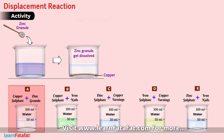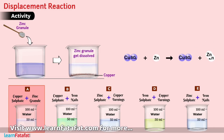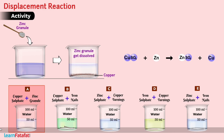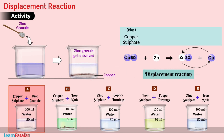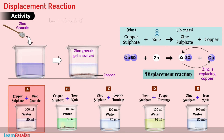What this means is that zinc must have displaced the copper atoms from copper sulphate solution. Such a reaction is called a displacement reaction. It is given as: copper sulphate reacts with zinc and produces zinc sulphate and copper. Since zinc is replacing copper from its compound, zinc must be more reactive than copper.